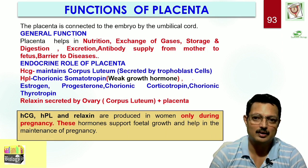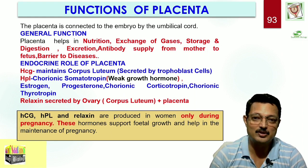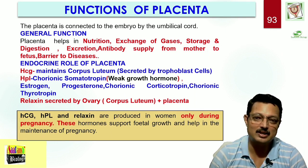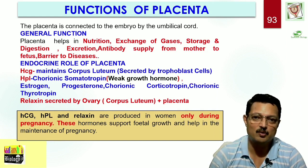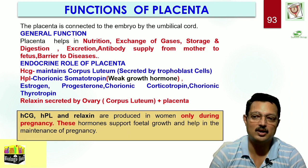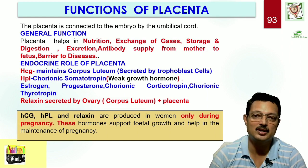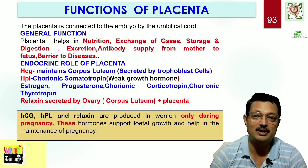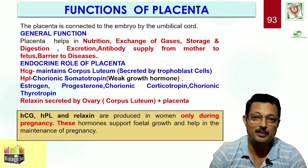Now let us talk about the endocrine role, because hormones play a very important role in the development of the fetus. As soon as placenta formation takes place, the trophoblast cells start secreting HCG — human chorionic gonadotropin. This is very important because it maintains the corpus luteum, and the corpus luteum secretes progesterone, which is important for maintaining the endometrial lining. At this stage, the corpus luteum is also called the corpus luteum of pregnancy.